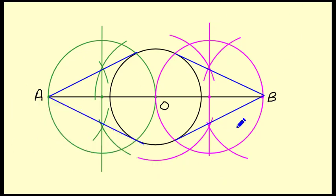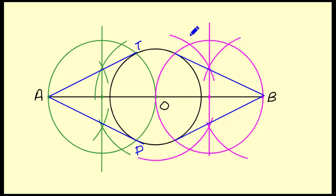The blue lines are the required tangents. We can label them: AT and AP are the tangents from point P to the circle, and BD and BC are the required tangents from point Q to the circle.